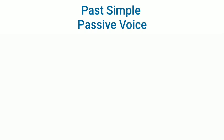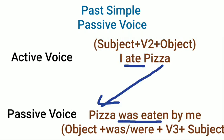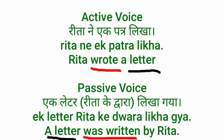Now we move to Past Simple passive voice. Active voice structure: subject + verb second form + object. The object becomes subject in passive. For example: 'I ate pizza' — passive: 'Pizza was eaten by me' — was + verb third form + by me. 'Rita wrote a letter' — 'wrote' is second form of 'write' — passive: 'A letter was written by Rita.' 'A letter' was the object, so it becomes subject. Remember: Past Simple uses was + verb third form.